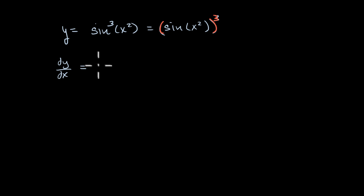So it's going to be three times that something squared times the derivative with respect to x of that something. In this case, the something is sine, let me write that in the blue color, it is sine of x squared.